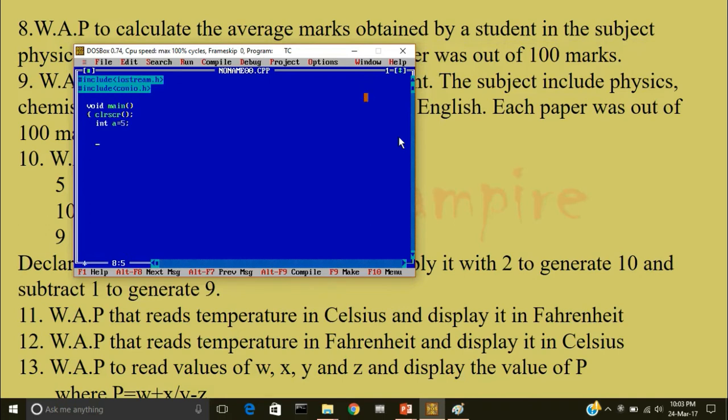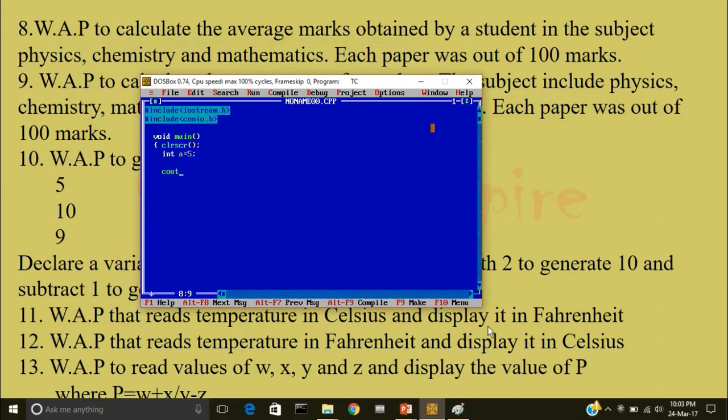Now to produce the following output, I'll type cout. The output is 5, 10, 9. cout less than less than a. Whatever is in the memory location a will be displayed. As you can see it is initialized to 5, so 5 would be displayed. Then less than less than I want to go to a new line. So within single quote I'll write slash n.